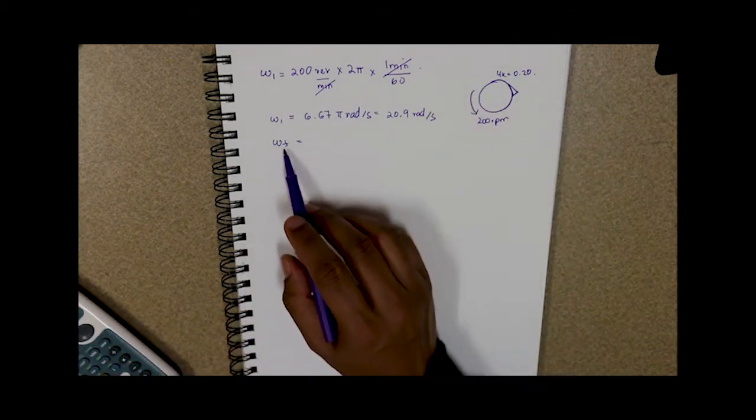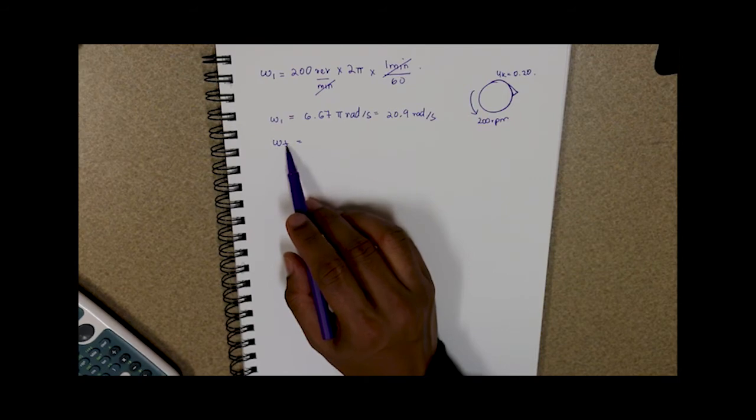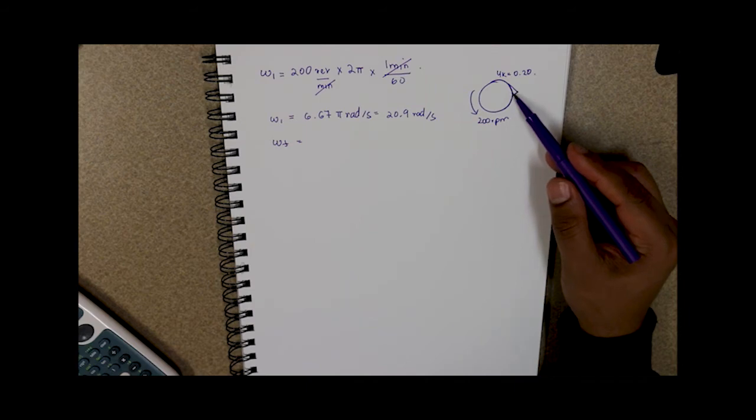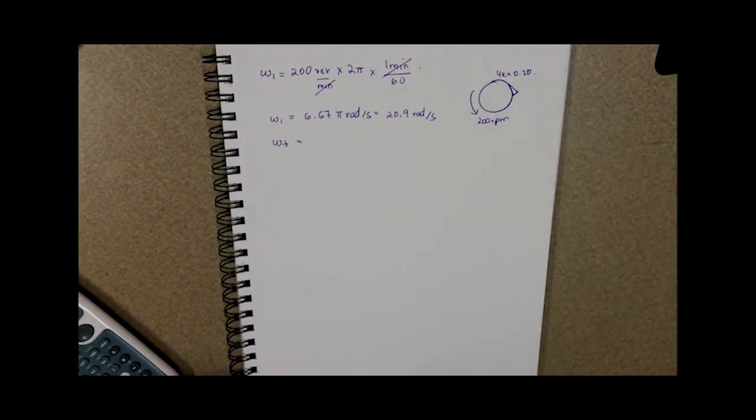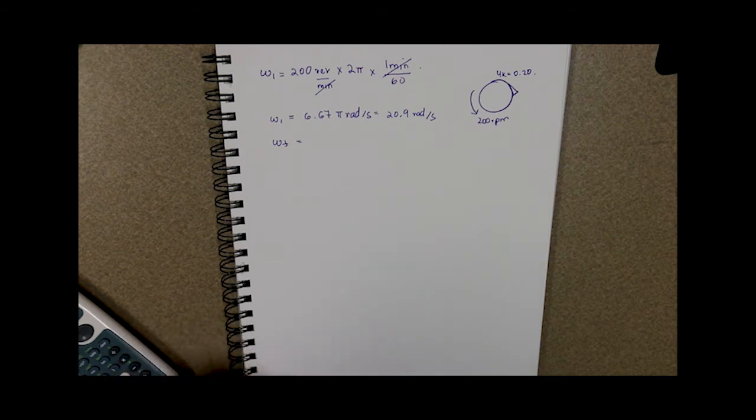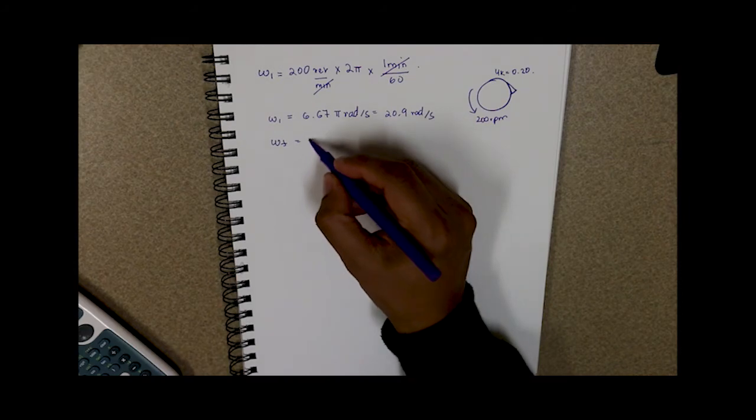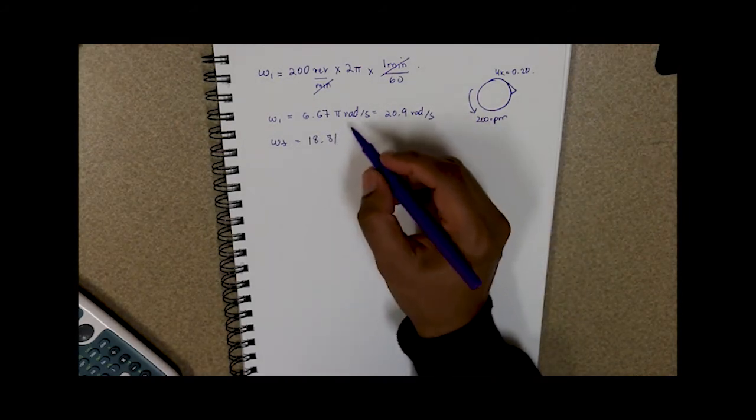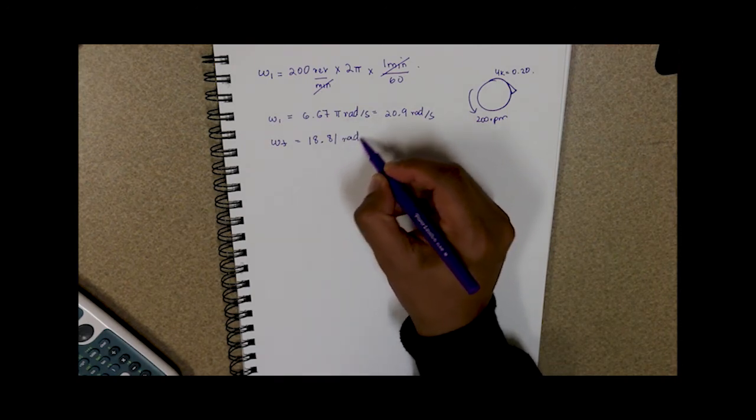Now if we want to find the final angular velocity after the tradesman has pushed the knife against the rim of the grinding stone, we can calculate 10 percent. That means 0.1 of 20.9. So we minus 20.9 from 20.9 and our final angular velocity will be equal to 18.81 radians per second.